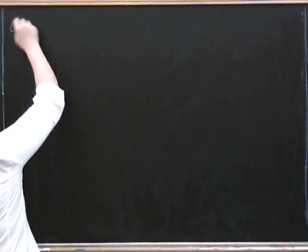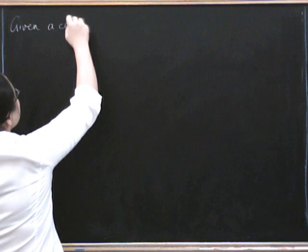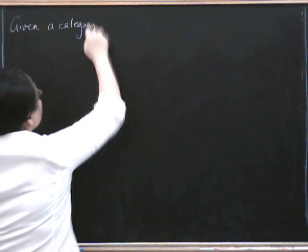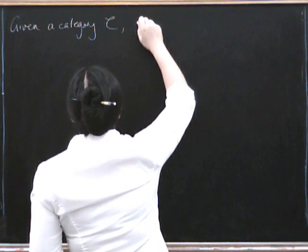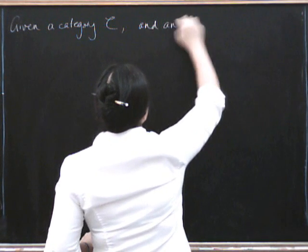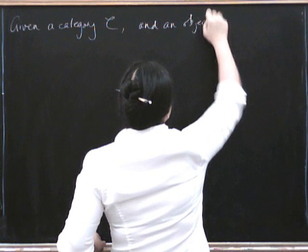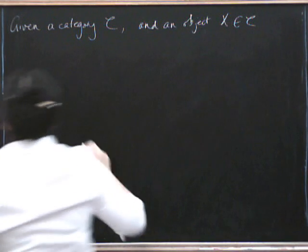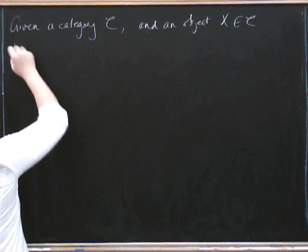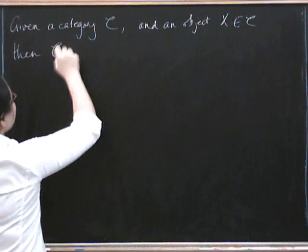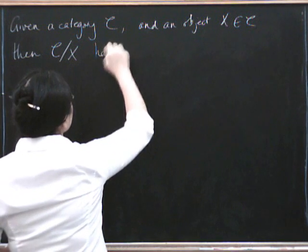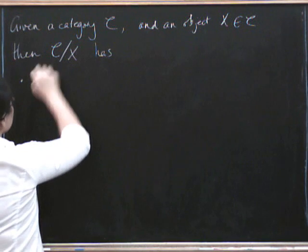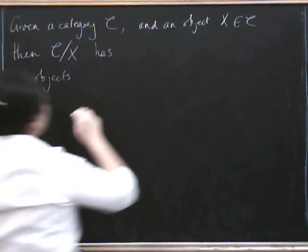So first of all, what's a slice category? Given a category C, we can kind of slice it over some object in C. So we fix an object x in C, then we can form this slice category. Then we have C sliced over x, which has the following objects.